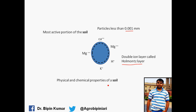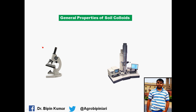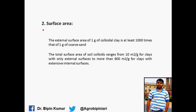This hormone layer governs mostly the physical and chemical properties of the soil. Soil Colloids have some interesting properties — if you want to see Soil Colloids through a simple microscope, it is not possible. You can visualize them only through an electron microscope. The surface area of one gram of colloidal clay is a thousand times greater than one gram of coarse sand. The total surface area of Soil Colloids ranges from 10 square meters per gram for clay with only external surface, to more than 800 square meters per gram for clay with extensive internal surface area.